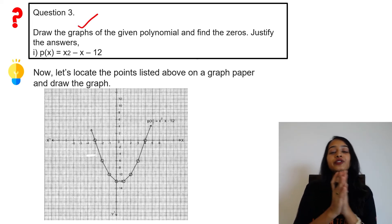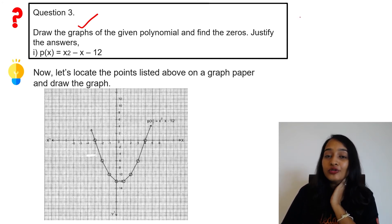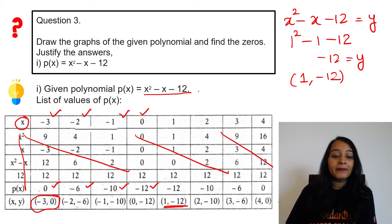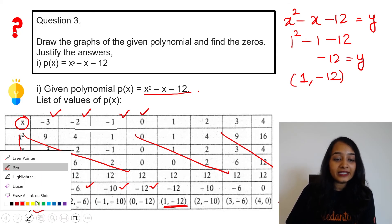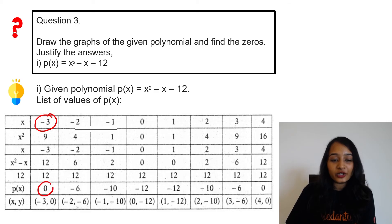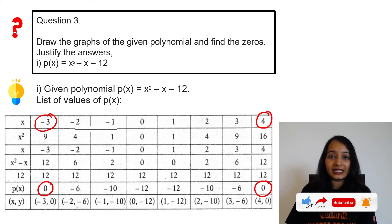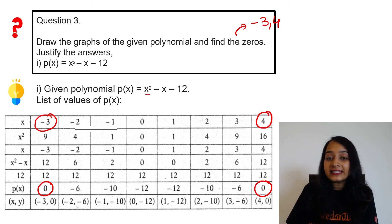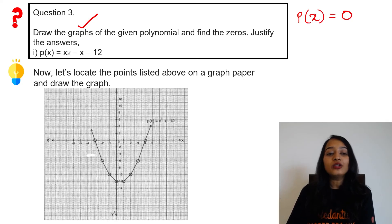Find the zeros of the polynomial. Zeros means for which values of x does p(x) become 0? When I give x = -3, p(x) = 0. When I give x = 4, p(x) = 0. So our roots are -3 and 4. Why? Because when I substitute x = -3, p(x) = 0. When I substitute 4, p(x) = 0. Therefore, -3 and 4 are the zeros of the polynomial.